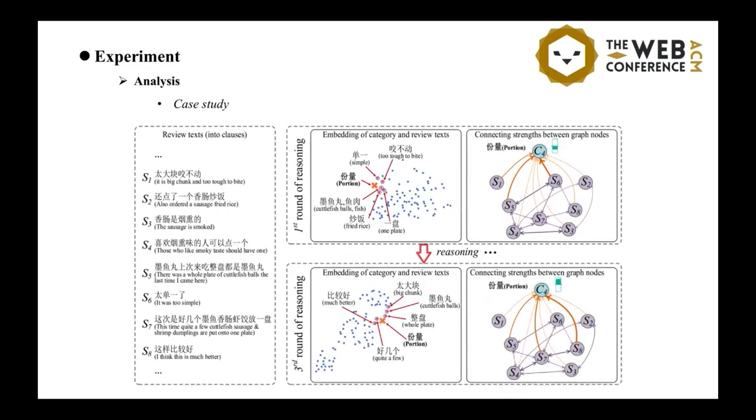Finally, we perform a case study to help understand how our model works with the iterative reasoning mechanism. At the first round of reasoning, the portion category word representation is quite well projected to the irrelevant review words such as simple and one place.